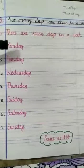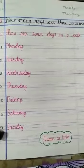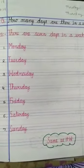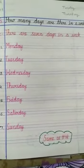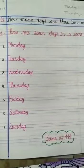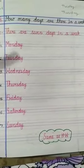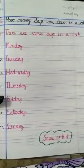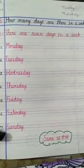So there are 7 days in a week. You have to read and you have to learn weekdays. So again I am repeating: Monday, Tuesday, Wednesday, Thursday, Friday, Saturday, Sunday.